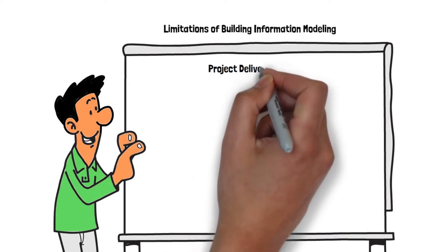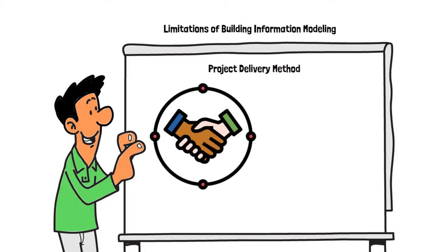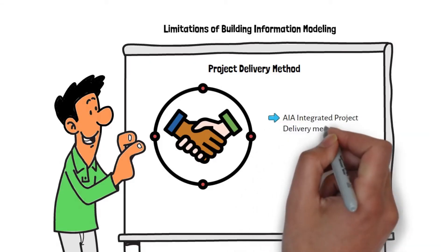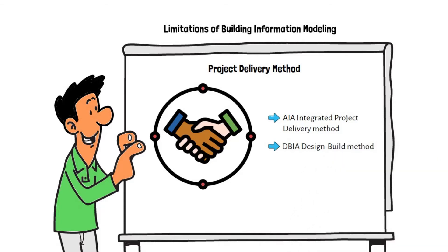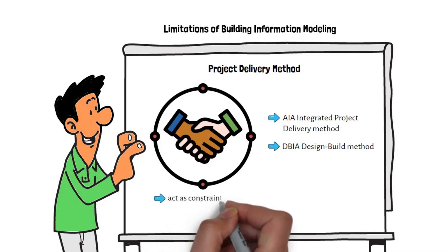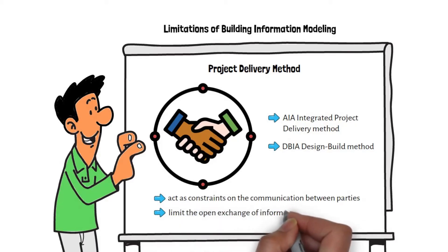Limitations of Building Information Modeling. Project Delivery Method: The key factor in BIM is the collaboration and cooperation of parties involved in the project. A collaborative project delivery method such as the AIA Integrated Project Delivery Method or the DBIA Design-Build Method aligns best with the collaborative intent of BIM. While there are examples of construction manager at risk and design-bid-build projects using BIM, the contractual relationships between the owner, architect, and contractor can constrain communication and limit the open exchange of information.